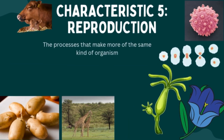Reproduction. Reproduction ensures the continuation of a species. This process allows living organisms to produce more of their own kind, passing genetic information from one generation to the next, either through sexual or asexual means.